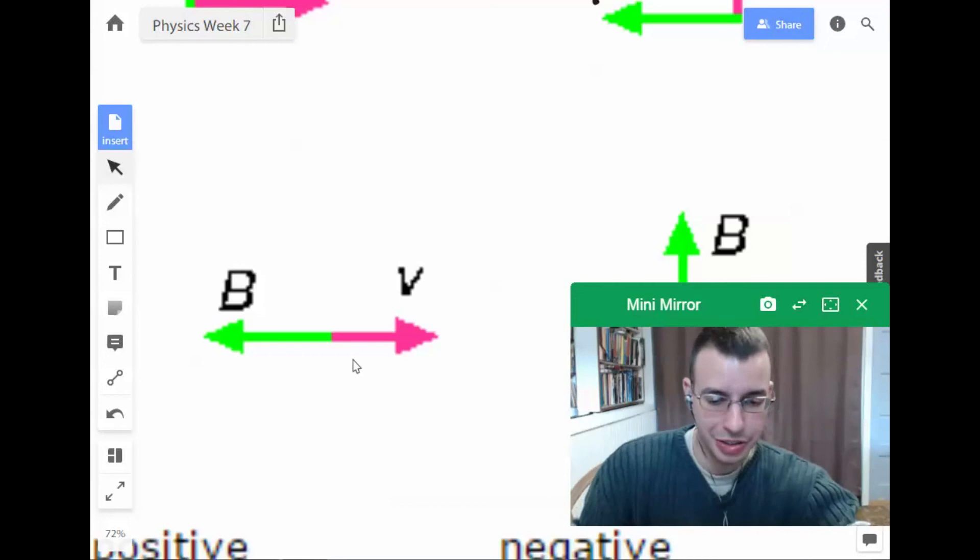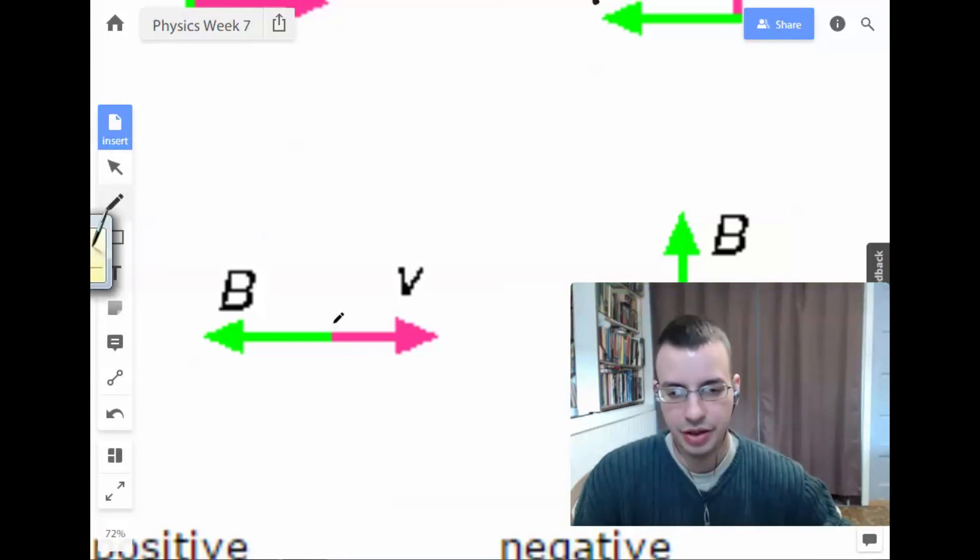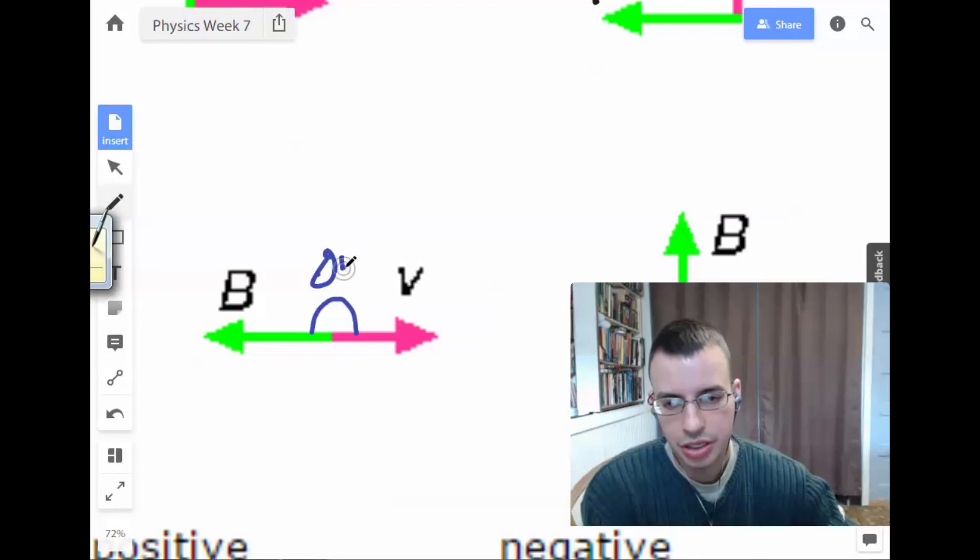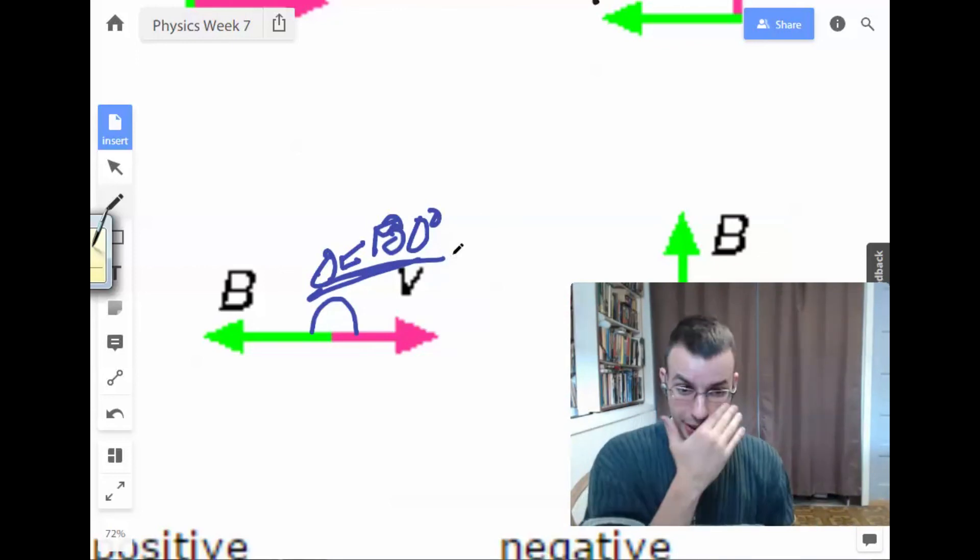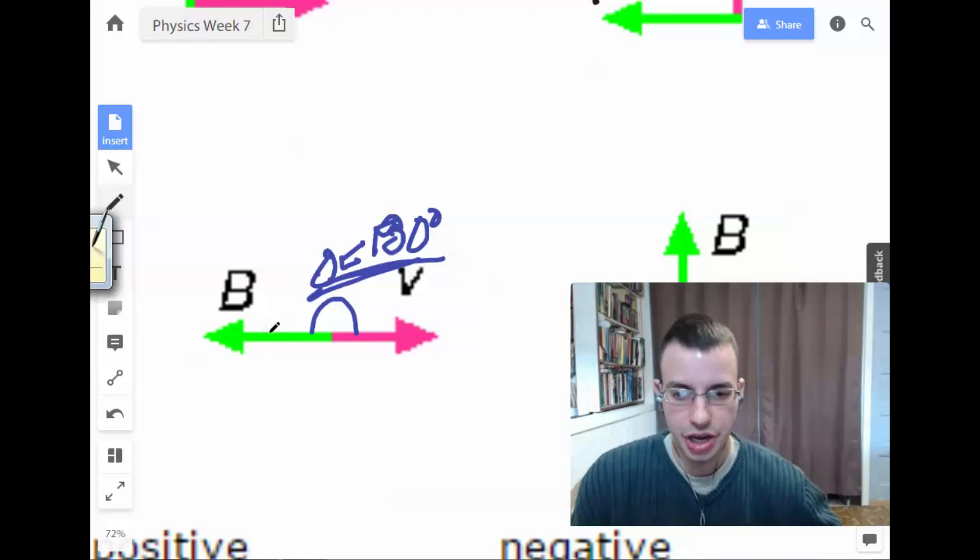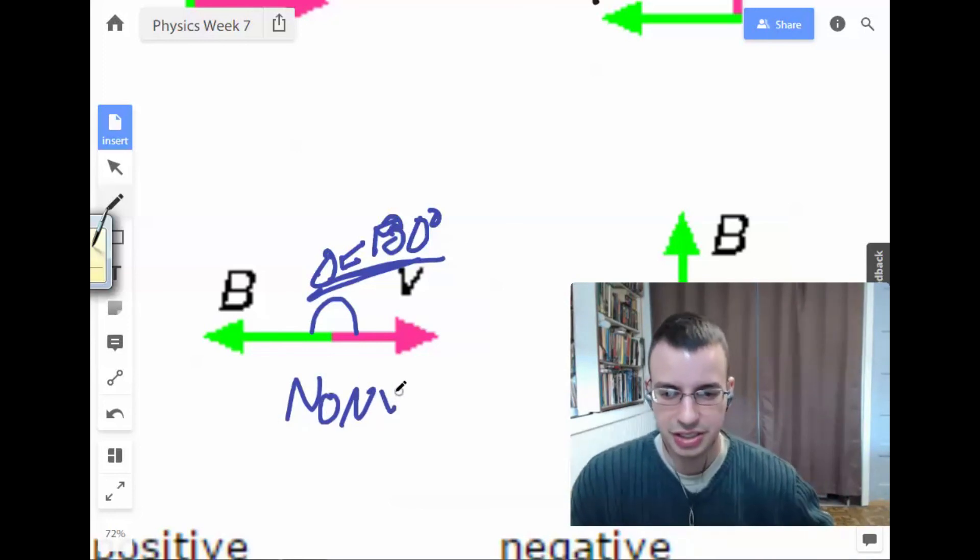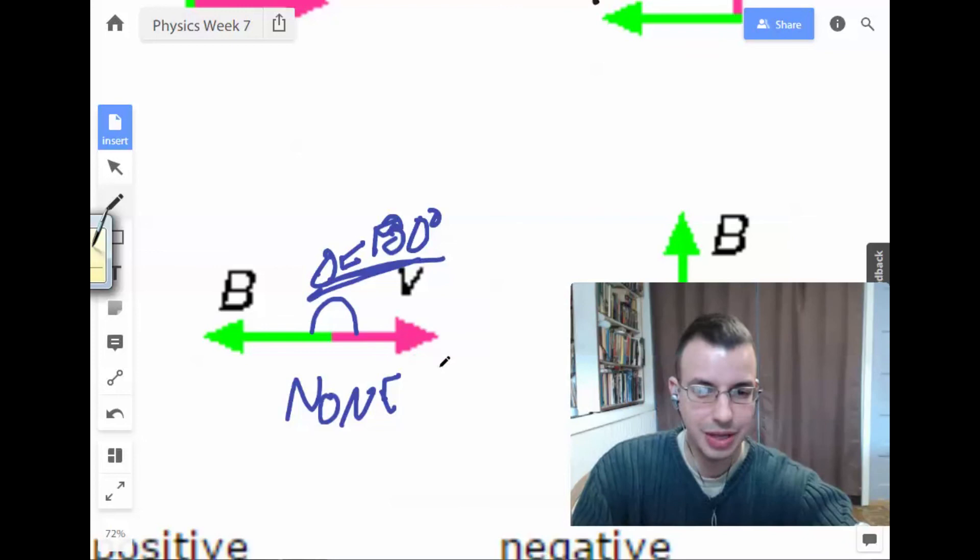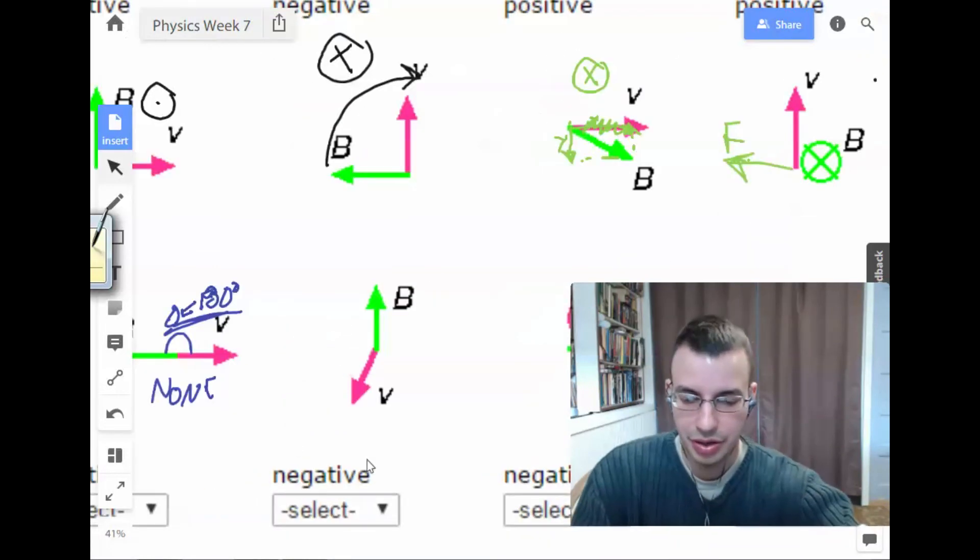So this guy, we have theta equals 180 degrees. Sine of 180 is zero. Therefore, none. Don't even know if it's negative or positive because negative zero is the same as positive zero.